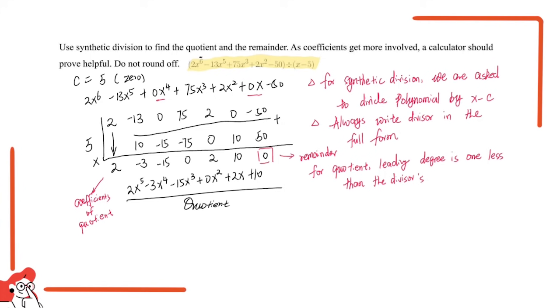What we can take away from this question is how to use synthetic division to find quotient and remainder. There are a couple of concepts we learned. First is to always write down the divisor in full form. Second, for quotient, the leading degree is one less than divisors. And third, the numbers we get after calculation are the coefficients for the quotient. So that's all for this question. See you in the next video.